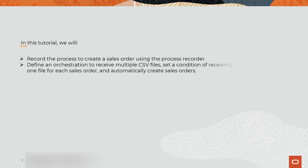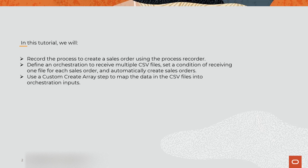In this tutorial, we will record the process to create a sales order using the Process Recorder, define an orchestration to receive multiple CSV files, set a condition of receiving one file for each sales order, and automatically create sales orders. We will use a custom Create Array step to map the data in the CSV files into orchestration inputs, and then test the orchestration.